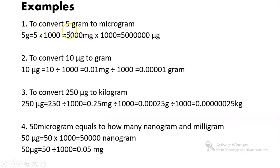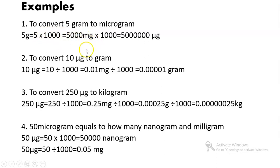Example: Convert 5 grams to micrograms. To convert gram to microgram, you must multiply twice by 1000. First multiply gram by 1000 to get milligrams, then multiply milligrams by 1000 to get the answer in micrograms. So you multiply by 1000 twice.